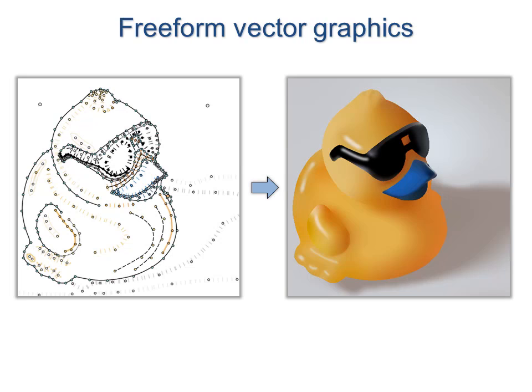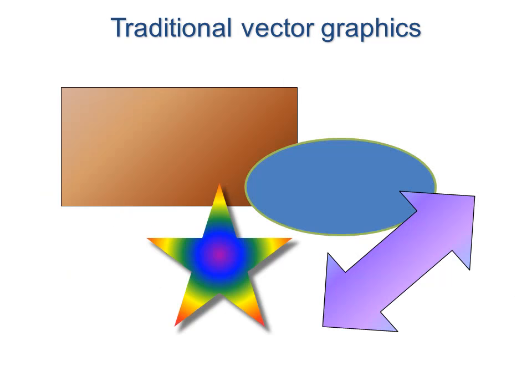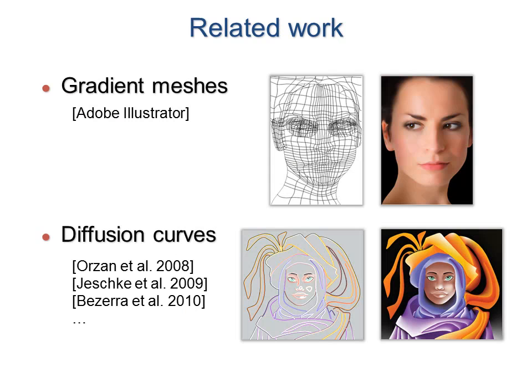We present a system to create free-form vector graphics. Traditional vector graphics involve closed shapes with simple fill functions. Our work builds on diffusion curves in which colors specified along curve sides are interpolated.